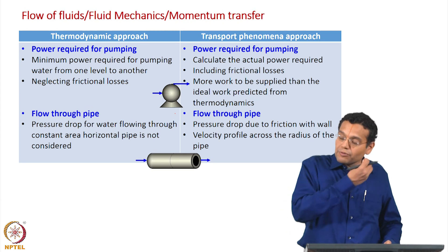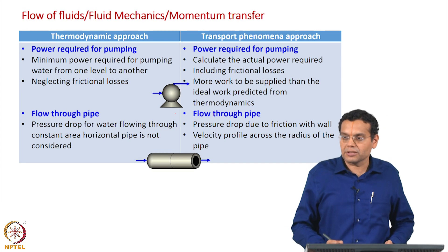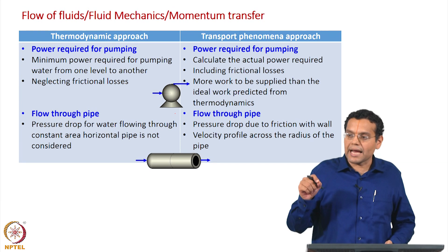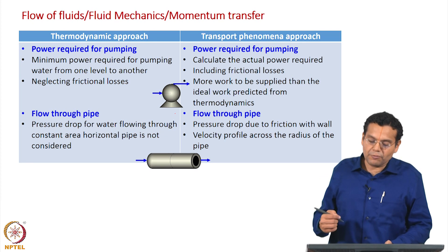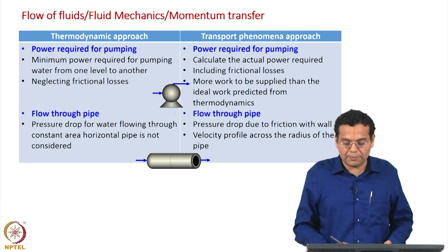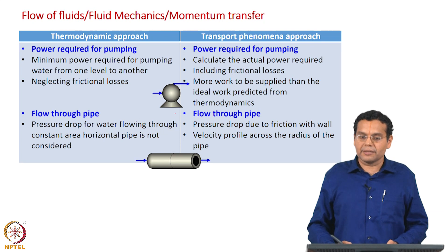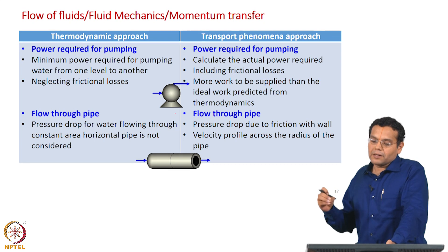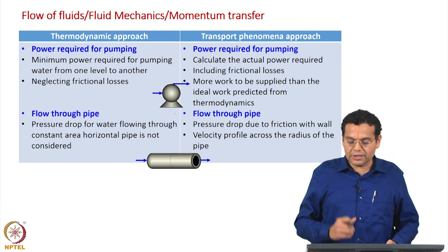Using a transfer phenomena approach, you can calculate the actual power required, because we include frictional losses. The liquid flows through the pipe and loses energy due to friction from contact with the wall — we include that. So you can calculate the actual power required to pump water from one level to another. The thermodynamic approach gives the minimum work required; the transfer phenomena approach gives the actual work required including frictional losses.